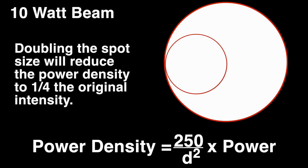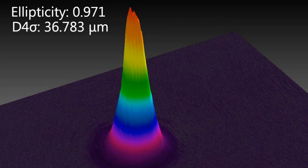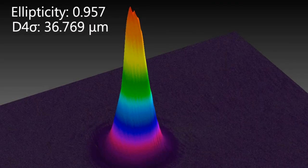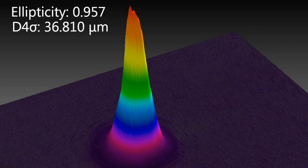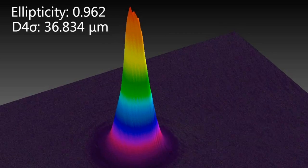Therefore, doubling the spot size will reduce the power density to one-fourth of the original intensity. Most laser beams present a beam profile that is most intense in the center, then decreases in power density as you move away from the center.